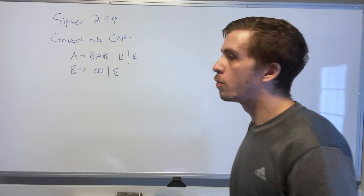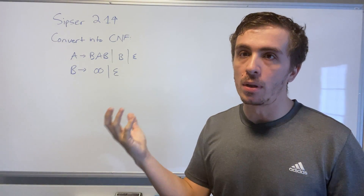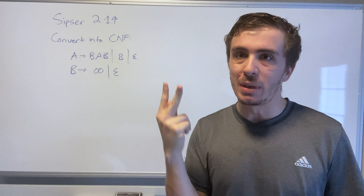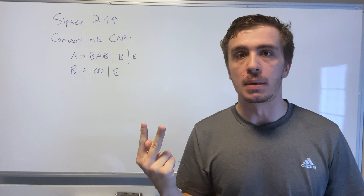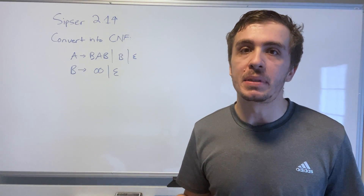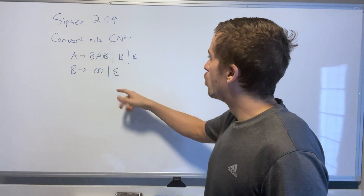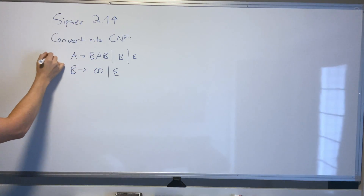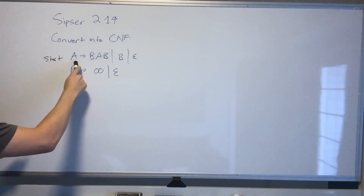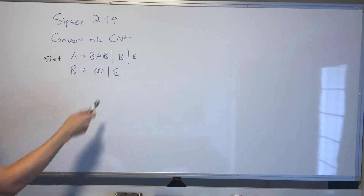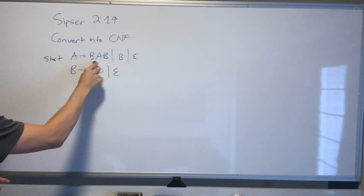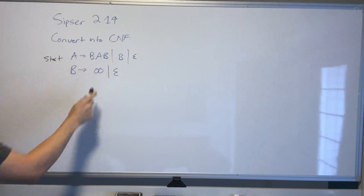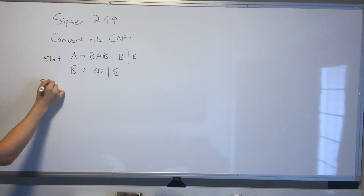Remember that Chomsky Normal Form requires the start variable at the beginning, and every rule either goes to a single terminal or to exactly two variables that are not the start variable. Also, the only variable that can produce the empty string is the start variable. Here, A is the start variable — A can go to the empty string, that's fine. But B cannot, and that's not allowed. We also have three variables on one rule and a single variable with two terminals, so we have work to do.